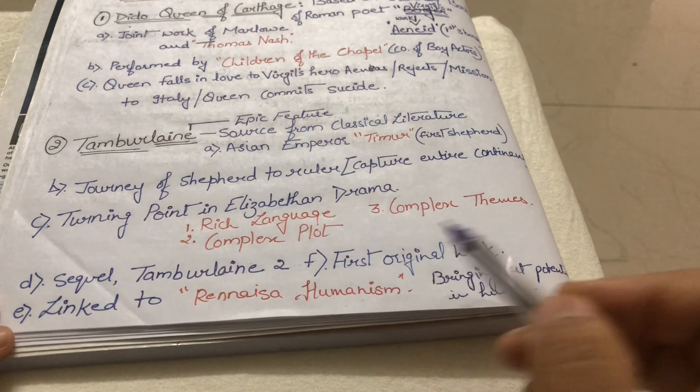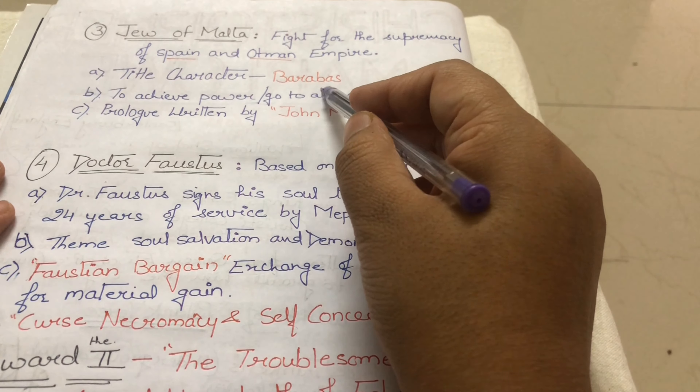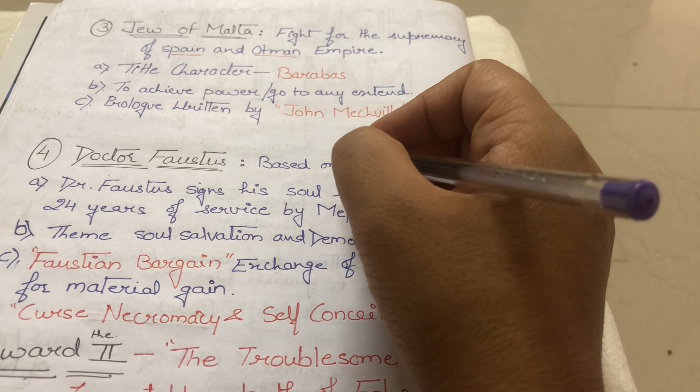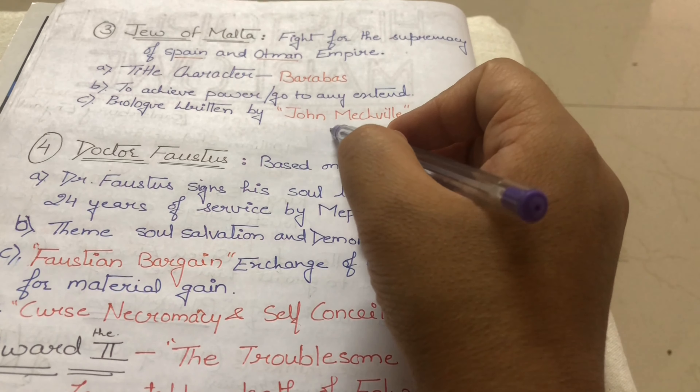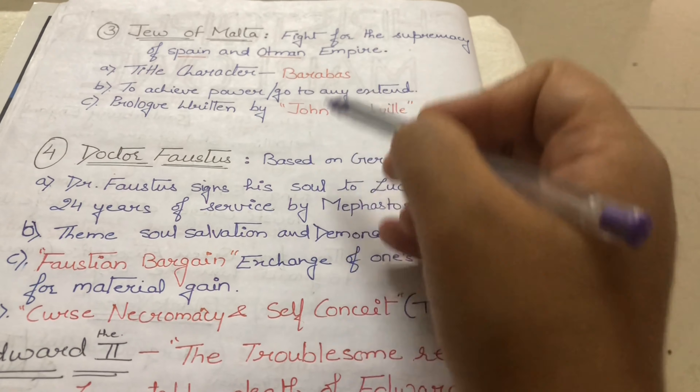The next work is The Jew of Malta. It depicts the fight for supremacy between Spain and the Ottoman Empire. The title character is Barabbas, who believes one can go to any extent to achieve power. The prologue was written by Machiavel.